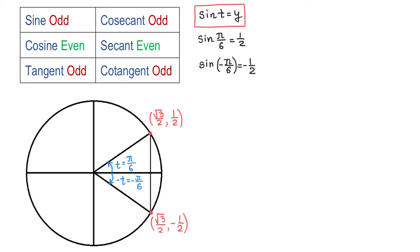What we did in this sine function is we replaced t with negative t. If these values would be the same, then this function would be even. But if these values are opposite of each other, then this function is odd. So then sine is an odd function.